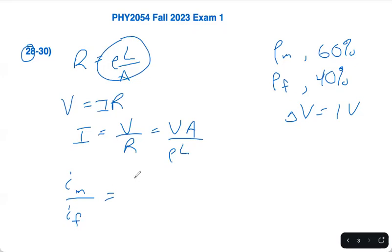I would have V A of the muscle, rho of the muscle, L, V A of fat, rho of fat over L. The reason I'm using L is because the lengths are going to be the same in this case, because the length of the muscle and the length of the fat is going to be L in general. So the Ls are going to cancel.